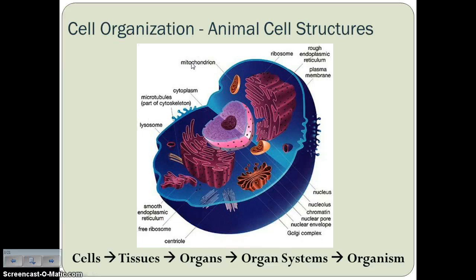Number 2B on your notes organizer asks how are animals organized. We start at the cellular level, then similar cells make up tissues, then similar tissues make up an organ — for example, muscle tissues make up a certain muscle. Similar organs make up an organ system, and then all of those organ systems working together make up the organism.